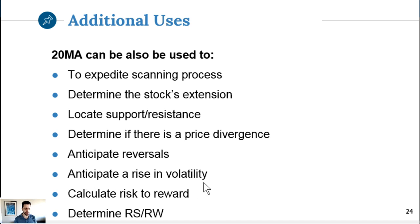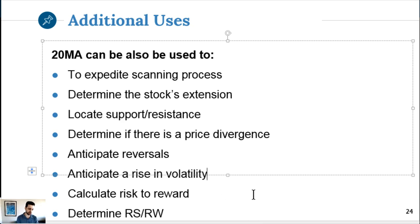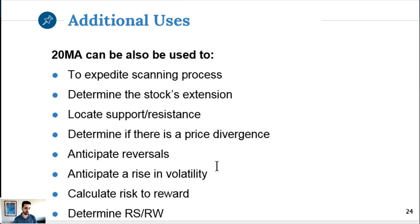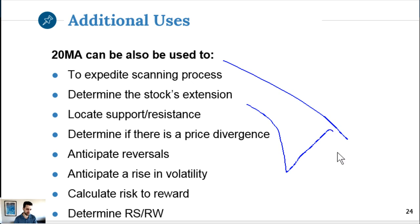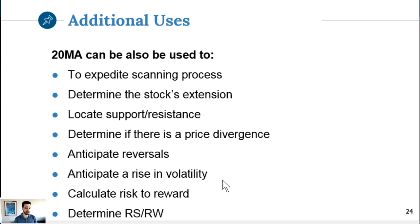You can spot divergence using an indicator like the MACD, but why use another indicator when you can spot it based on the 20MA? When the stock gets too far from the 20 it snaps back. The 20MA can also help anticipate a rise in volatility - when the smaller moving average crosses over the larger, volatility is starting to increase. And you can use it to calculate reward-to-risk, using the 20MA as a target when going against the trend.